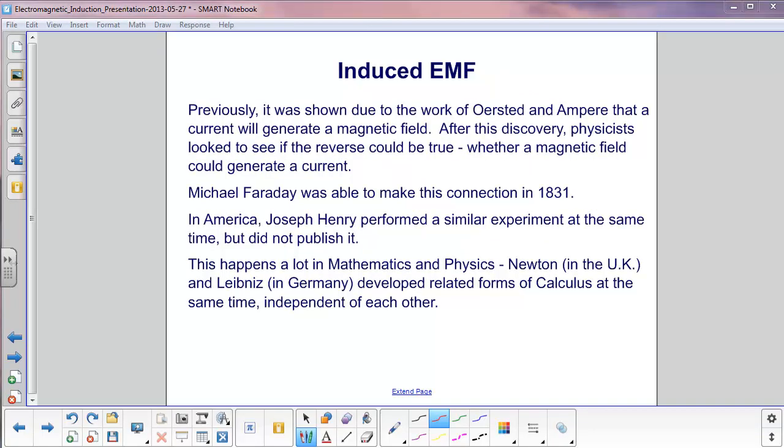Ersted and Ampere both did experiments that showed how a current will generate a magnetic field. After this discovery, physicists, who were always looking for symmetries, wanted to see if the reverse could be true. Could a magnetic field generate a current? Michael Faraday was able to make this connection in 1831.